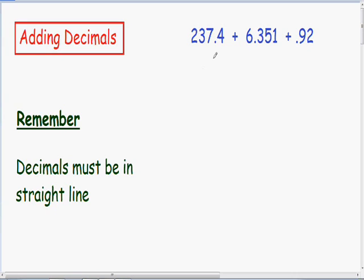Here we have 237.4 plus 6.351 plus 0.92. The decimals must be in a straight line. So let's set this problem up so we can add them together. We have 237.4 being added with 6.351.